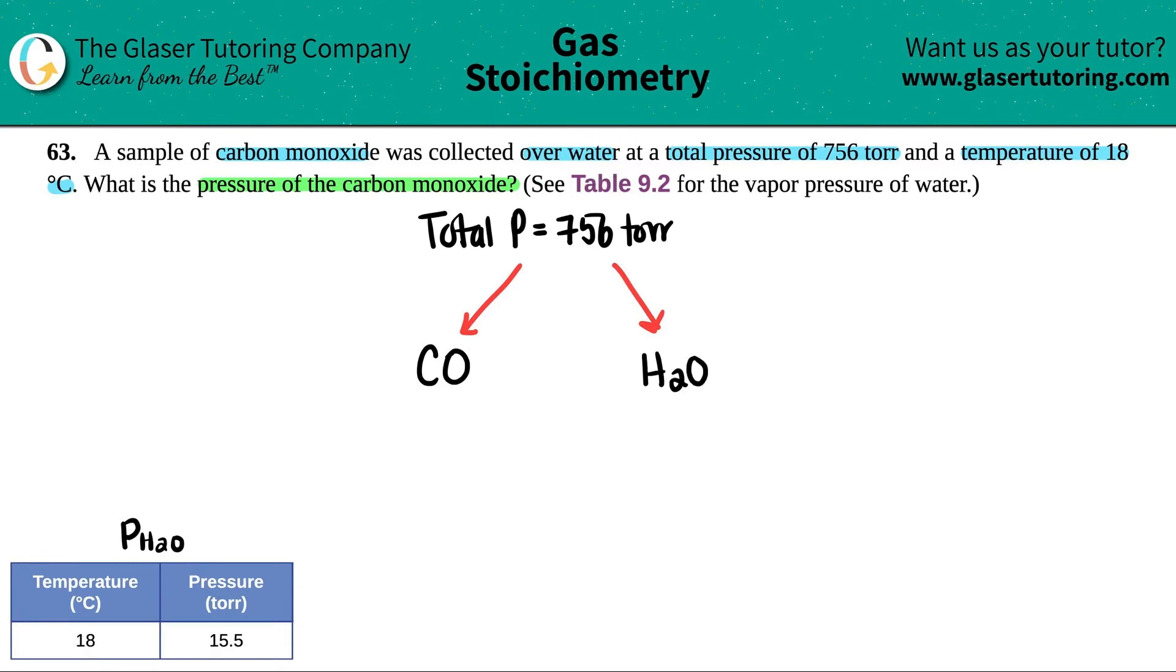We know from the table that the pressure of the water at 18 degrees Celsius is 15.5 torr. So the pressure of H2O is 15.5 torr.